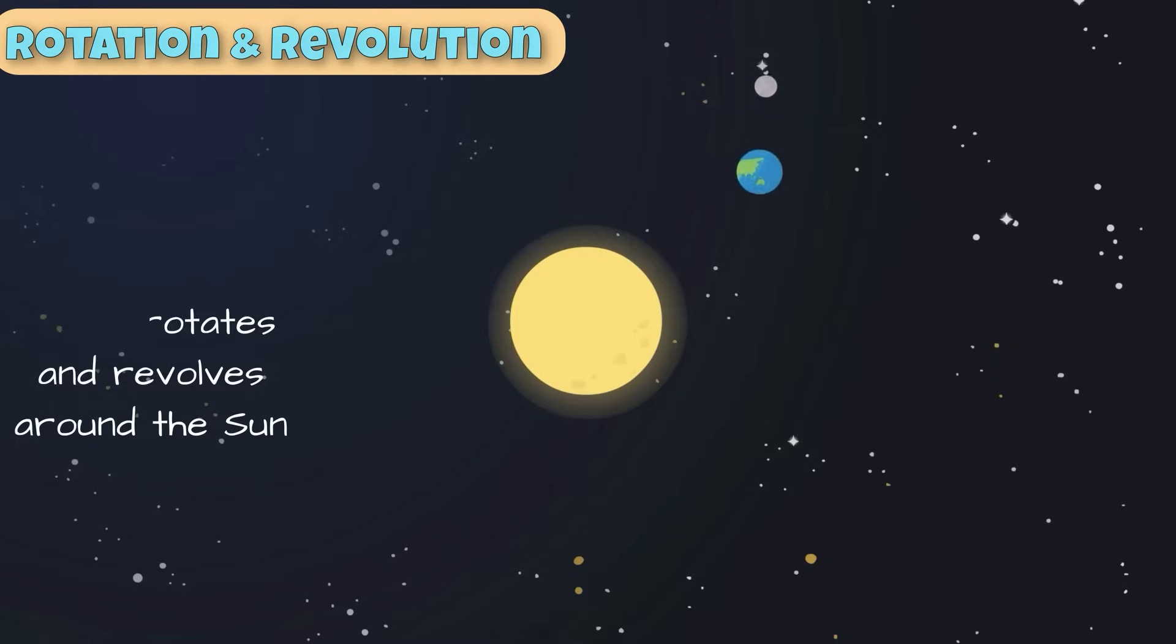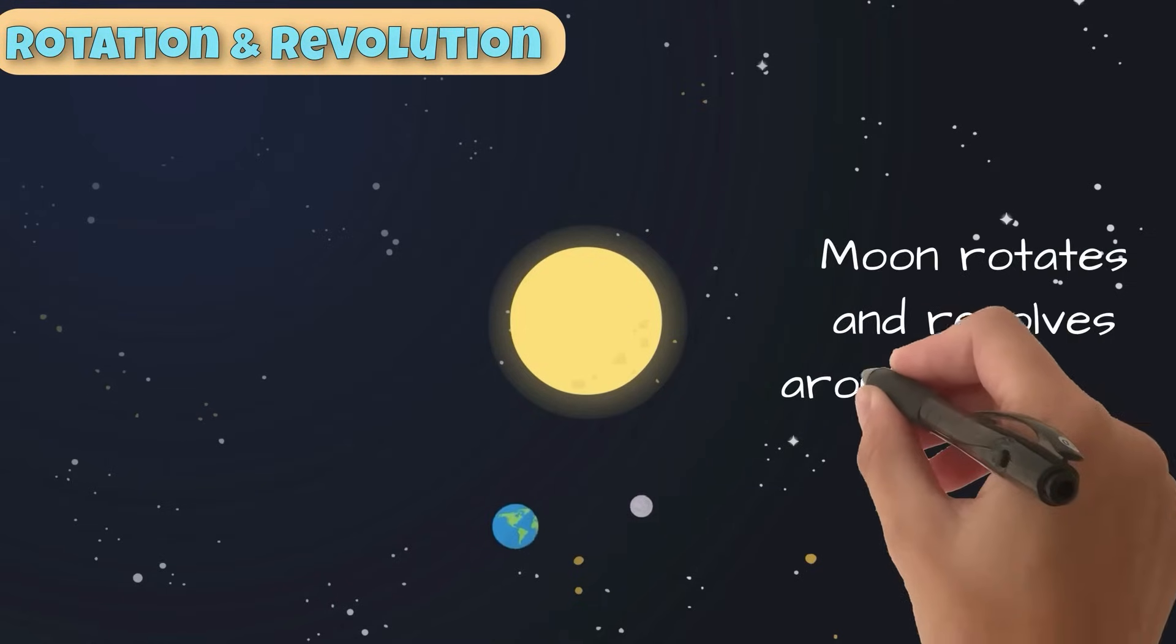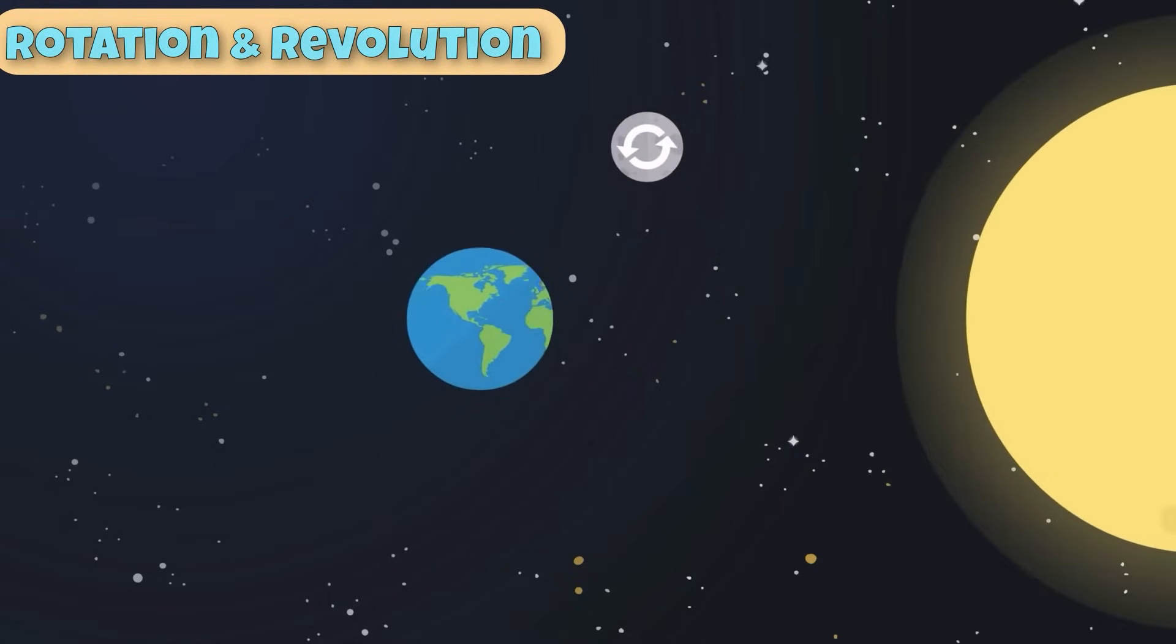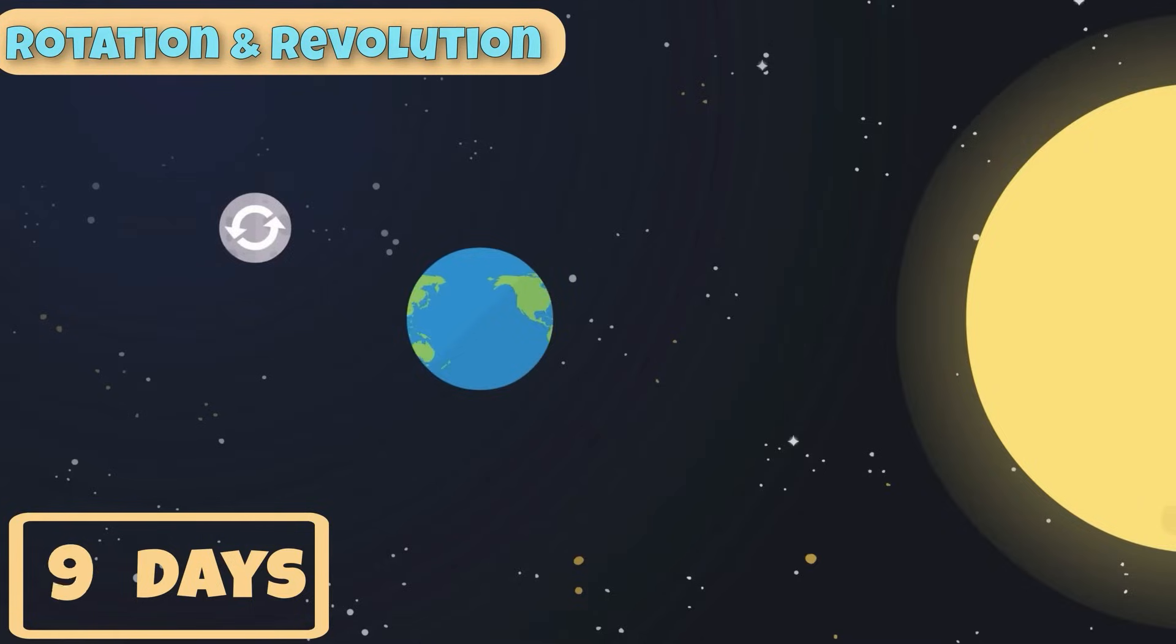Due to the Earth's gravity, the moon is also constantly rotating on its axis and revolving around the Earth. It takes the moon approximately one month or 27.3 days to complete one orbit around the Earth.